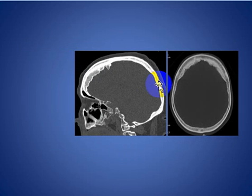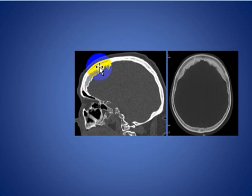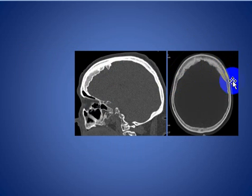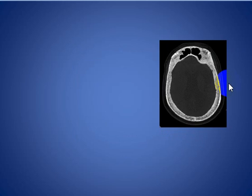Here is another patient with sagittal reformat showing thickening in the frontal region limited by the coronal suture. On the axial cut, it involves the bifrontal region and does not extend beyond the coronal suture.